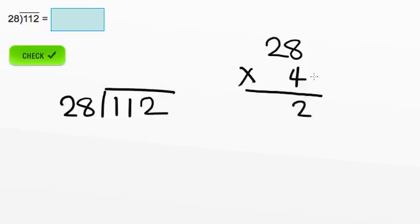4 times 8 is 32. We bring down the 2 and carry the 3. 4 times 2 is 8, plus 3 is 11. And what do you know? Our guess was right.